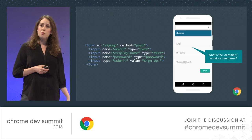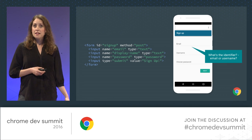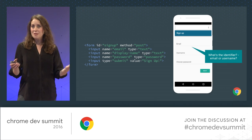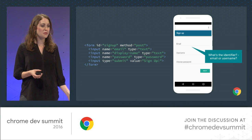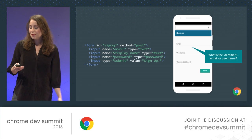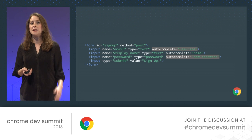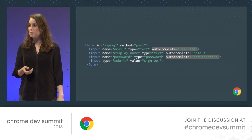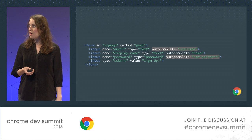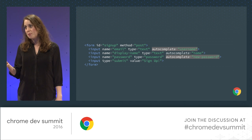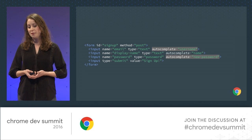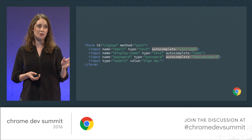Chrome offers autofill functionality that makes it easier for users to fill out forms faster and easier. But sometimes things are ambiguous — it's unclear which of these fields represents the user name or the identifier. Is it the user name or is it the email address? It's unclear to the user and to the browser. But the best thing to do with ambiguity is to be explicit, and an easy way to do that is to mark up your forms with autocomplete attributes. Then you can make sure your forms work perfectly with password autofill. It will only take you a few minutes.